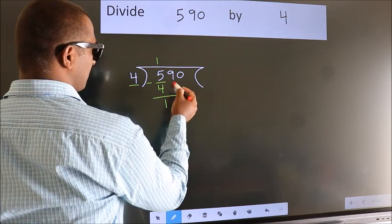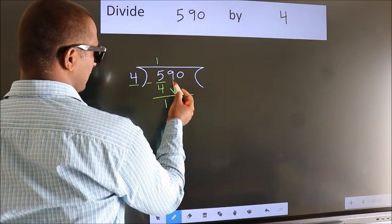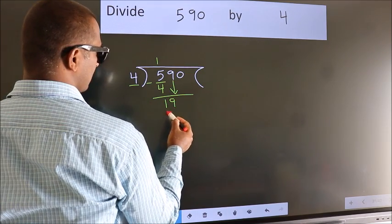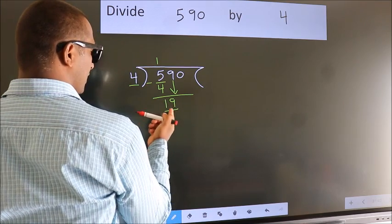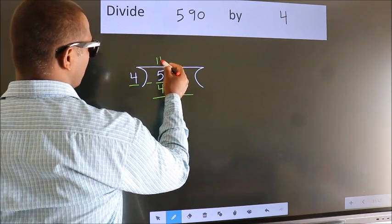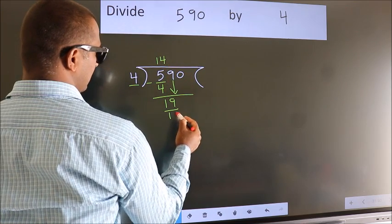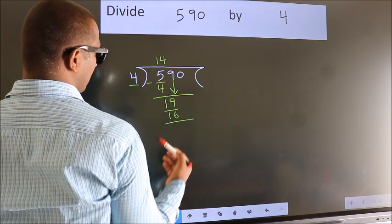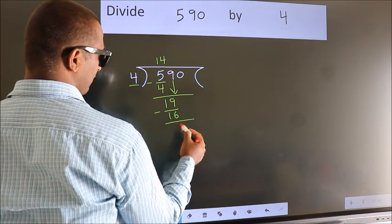After this, bring down the next number. So 9 down, making 19. A number close to 19 in the 4 times table is 16. Four fours is 16. Now we subtract and get 3.